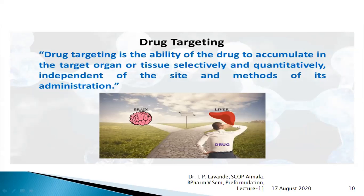Drug targeting is the ability of the drug to accumulate in the target organ, which may be a cell, the liver, or a tissue — selectively and quantitatively.